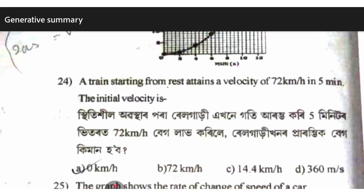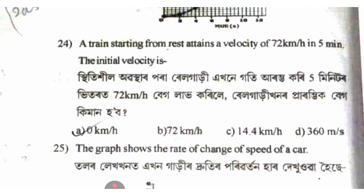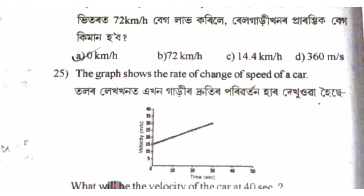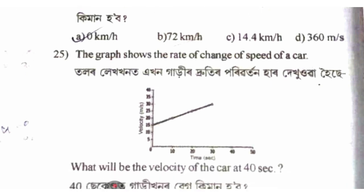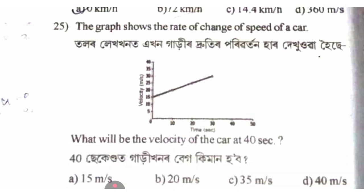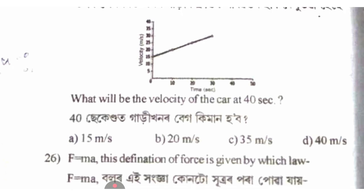A train starting from rest attains a velocity of 72 km per hour in five minutes. The initial velocity is zero. The graph shows the rate of change of speed of the car.